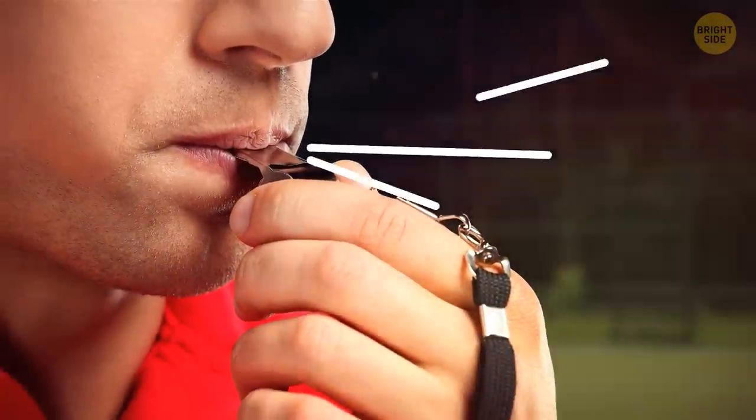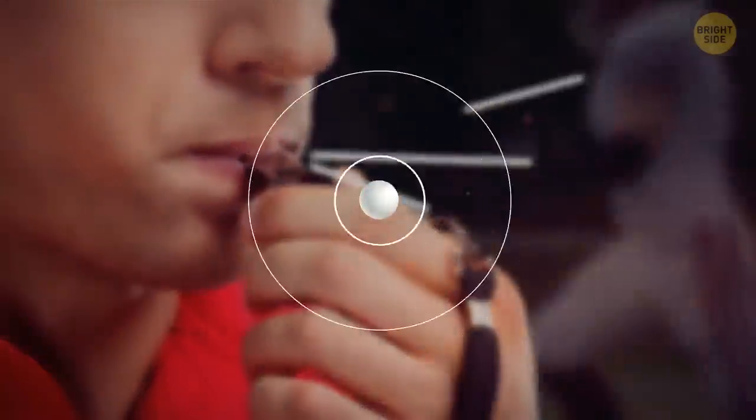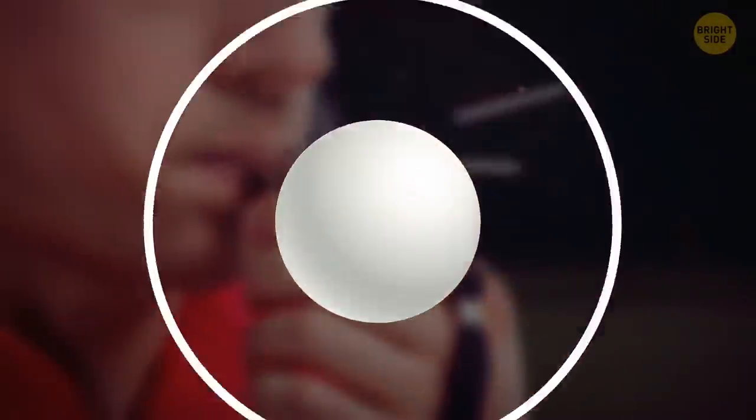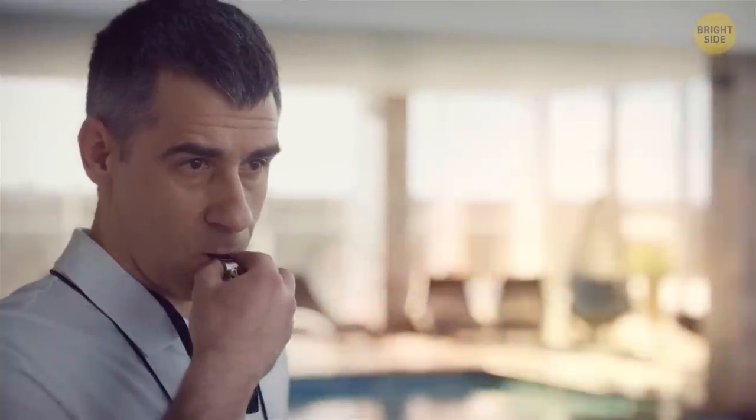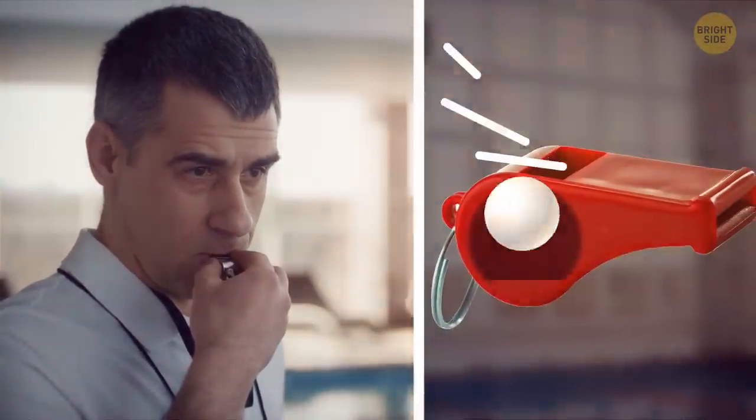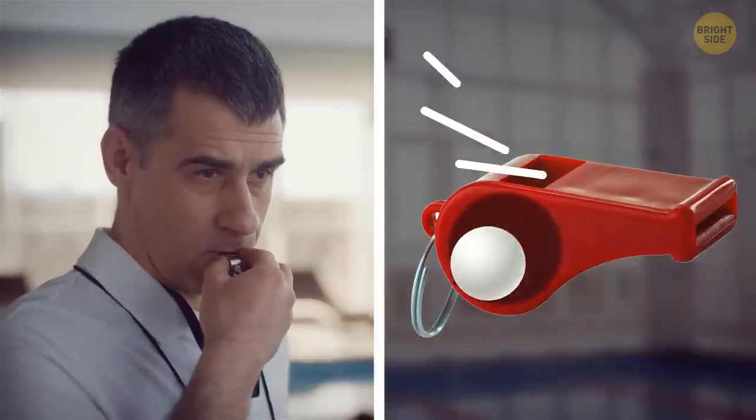Whistles can work perfectly fine even if they don't have that ball inside, yet they all have it. That's because even though there's a sound without the ball, the noise it creates is very flat and not distinguishable enough. When you blow, the ball starts moving around inside, creating different pitches and making the noise more noticeable.